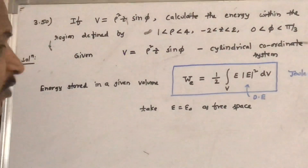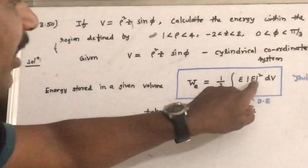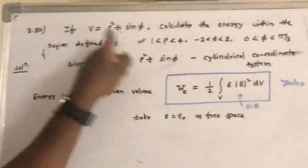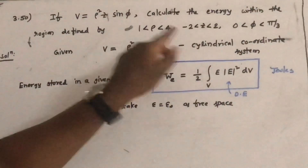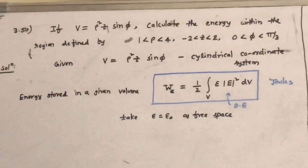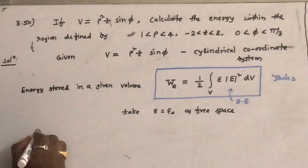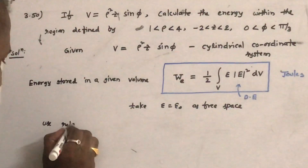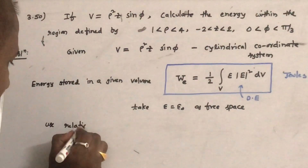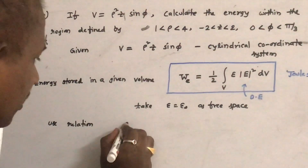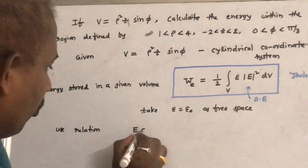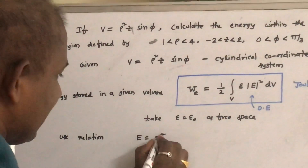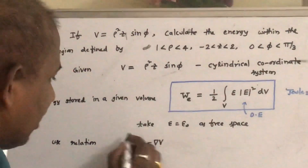Since E is not given in this problem, let us find E. Since V is given, use the relation E = -∇V.